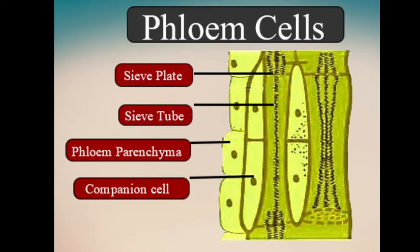Each sieve tube has a companion cell next to it. The companion cell has a nucleus and many other organelles. The work of the companion cell is to supply the sieve tube with some of their requirements.